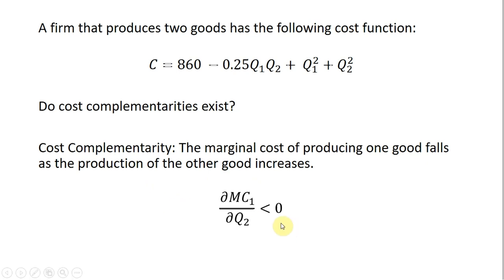Well, if the marginal cost of producing good 1 falls as we produce more of the other good, we have this indication of cost complementarity.